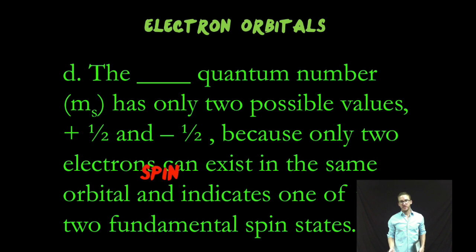The fourth quantum number is known as the spin quantum number, M sub S. This only has two possible values: plus one half and minus one half. And those are just the two values that are assigned to describe the two possible fundamental spin states. They're either spinning clockwise or counterclockwise.